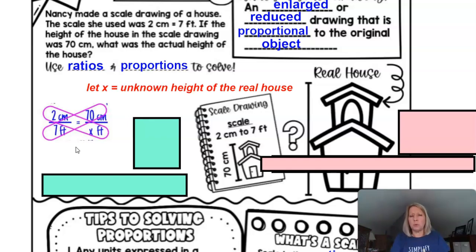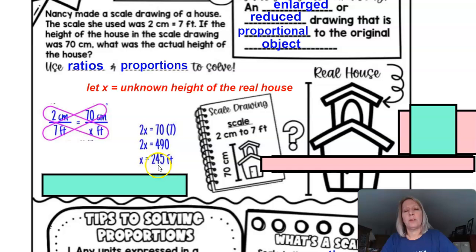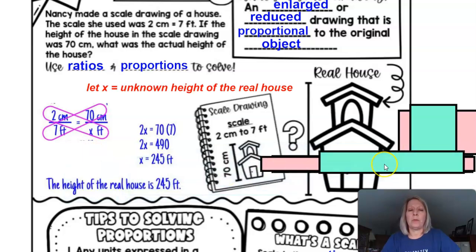We could take 2 times x in our diagonal here and set it equal to 7 times 70. So that comes out to 2x equals 490, and if we just divide each side of the equal sign by 2, we get x alone. So we're solving for x, and we're dividing the 490 by the 2, and you're getting 245 feet. So 70 centimeters represents 245 feet. Therefore the height of the real house is 245 feet.